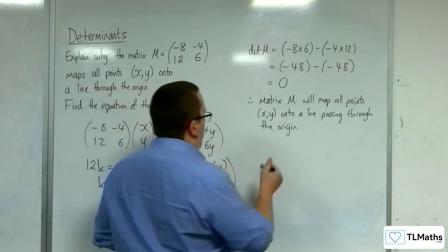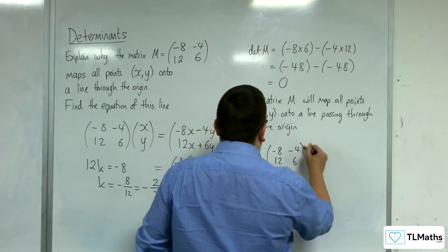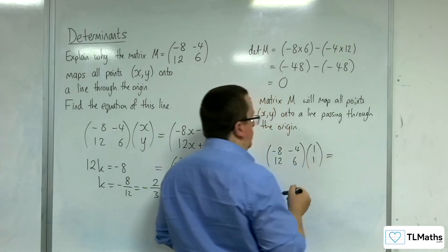Let's say, like, 1, 1. So, if we applied the matrix M to 1, 1, what would we get?